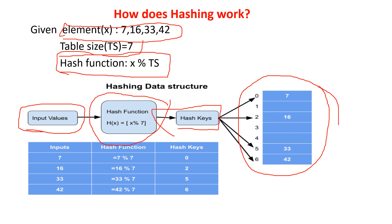The hash table is just a memory where we are going to store all these elements. We have 7, 16, 33, and 42. Using the hash function, if I calculate the index of 7: 7 modulus 7 gives 0, so 7 is stored at the 0th index. For 16: 16 modulus 7 gives 2, so 16 is stored at the 2nd index. For 33: 33 modulus 7 gives 5, so 33 is stored at the 5th index. For 42: 42 modulus 7 gives 6, so 42 is stored at the 6th index.